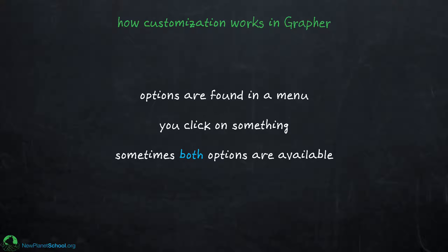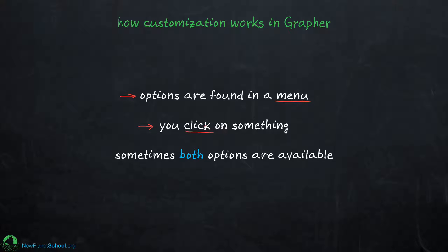Unfortunately Grapher can be a little bit confusing because it has a lot of different options found in different places. Some customization options are found in a menu, others appear when you click on a curve, axis, or label. There is also some customization where you have three different options that almost do the same thing but not quite. Once you get used to it you'll develop a workflow, but at first it can seem a little confusing.